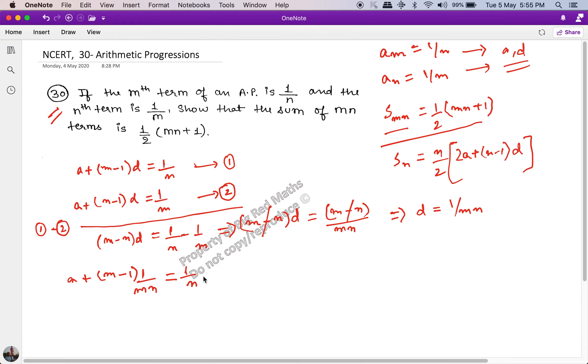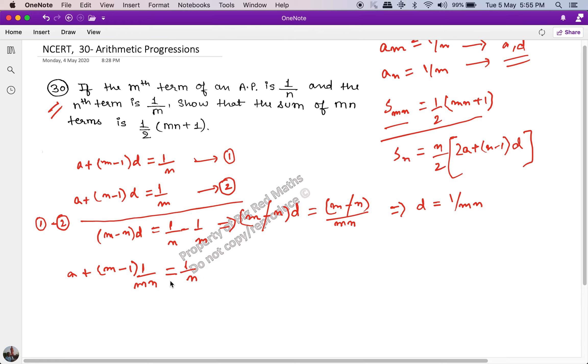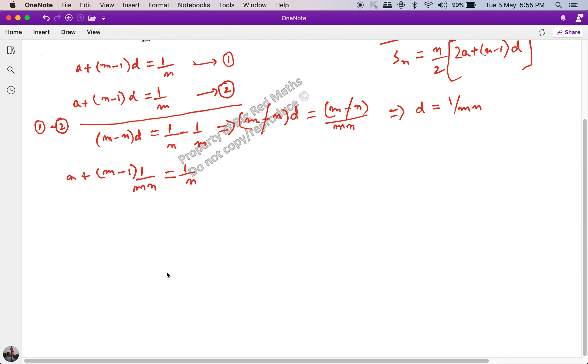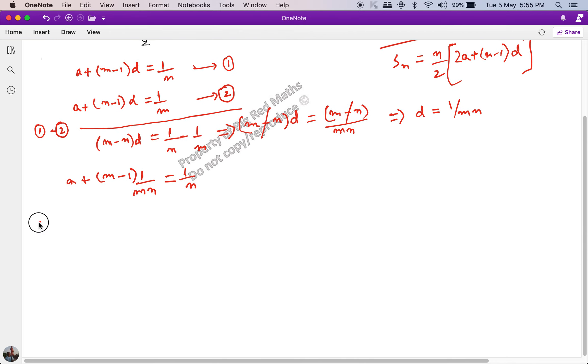a plus (m minus 1) into 1 upon mn is equal to 1 upon n. Now let us try solving this for a. What you'll get is you will get a plus 1 upon n minus 1 upon mn is equal to 1 upon n.